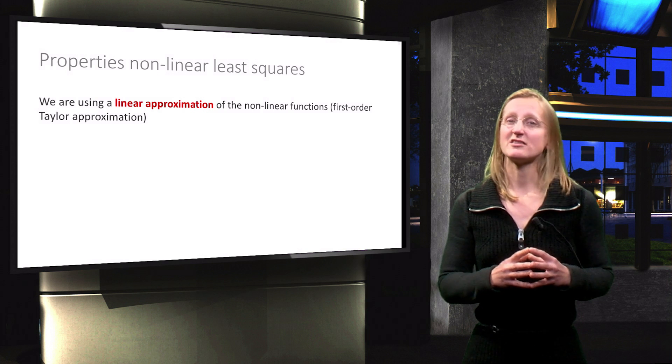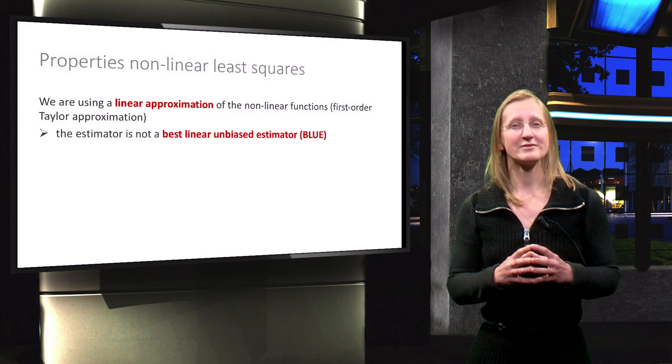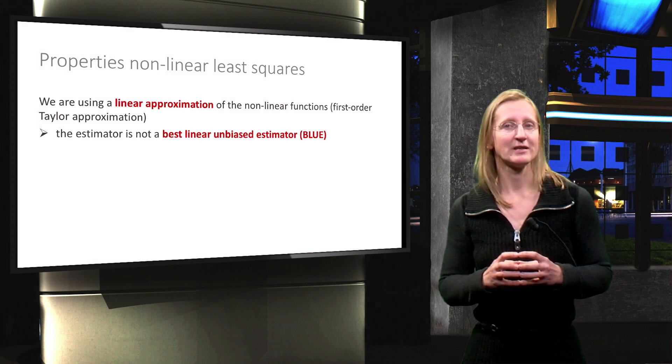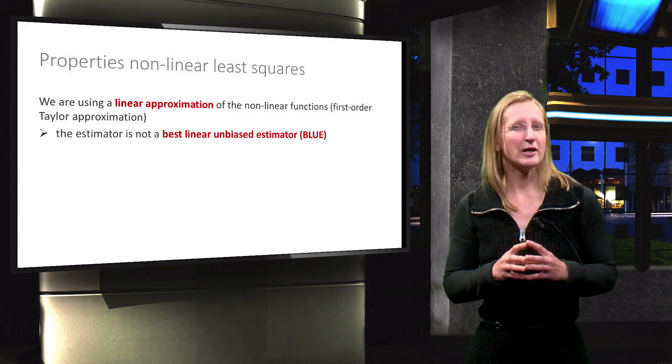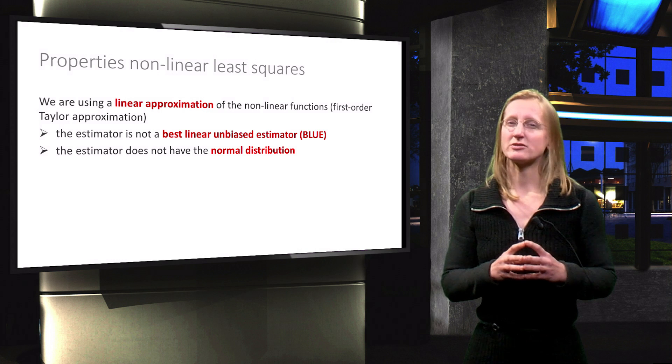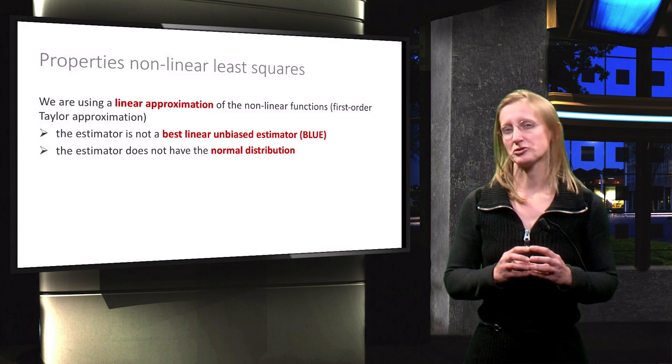This unfortunately implies that the non-linear least squares estimator is not a best linear unbiased estimator, even though we do apply BLUE to the linearized model. This also means that the estimator does not have the normal distribution.